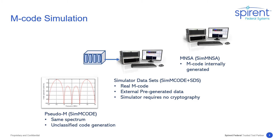M-code has been in development for a number of years. As specifications, user requirements, and government policies have changed, SPIRINT has responded with three M-code simulation capabilities and products. The first is SIM-M-code, which produces pseudo-M using a commercial encryption standard, as defined in ICD-GPS 700. This allowed receiver manufacturers to develop in an unclassified environment.